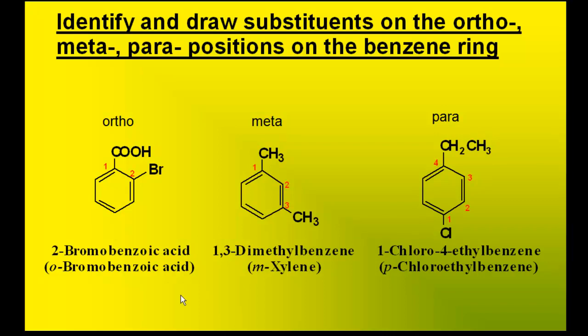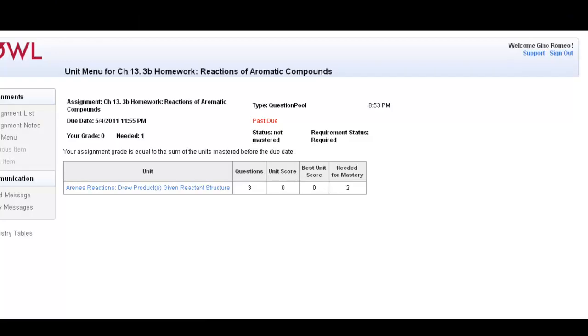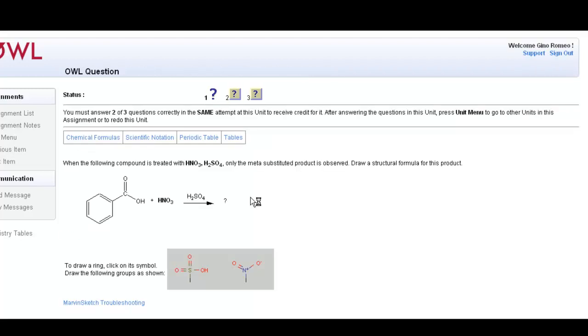So now let's use these names for relative position in OWL. The assignment in OWL titled Erring Reactions, Draw a Given Reactant Structure, covers the use of ortho, meta, para.